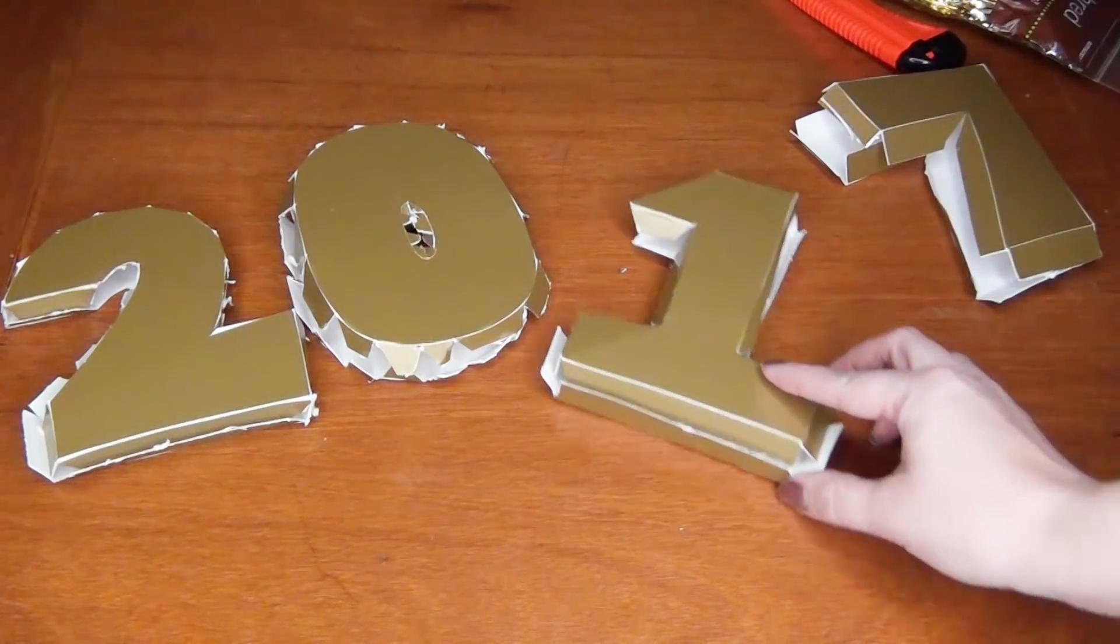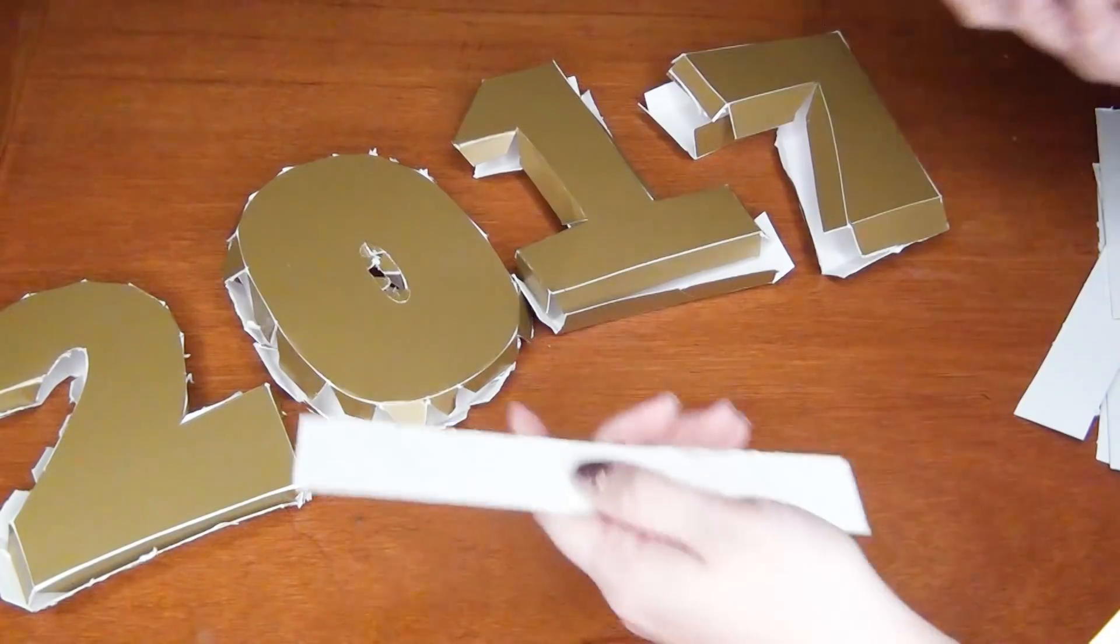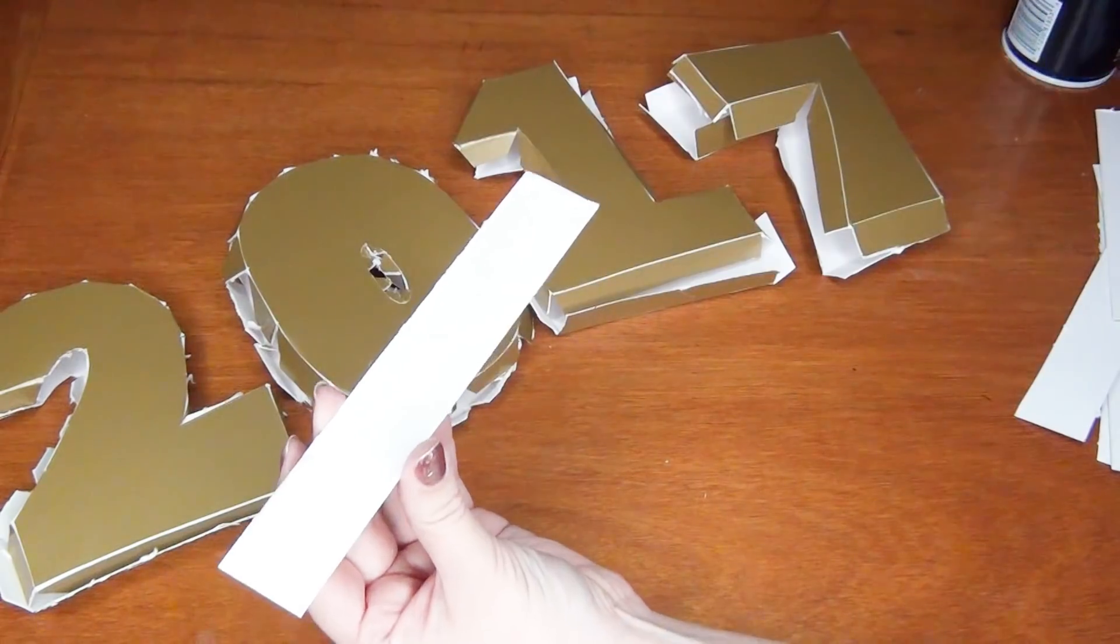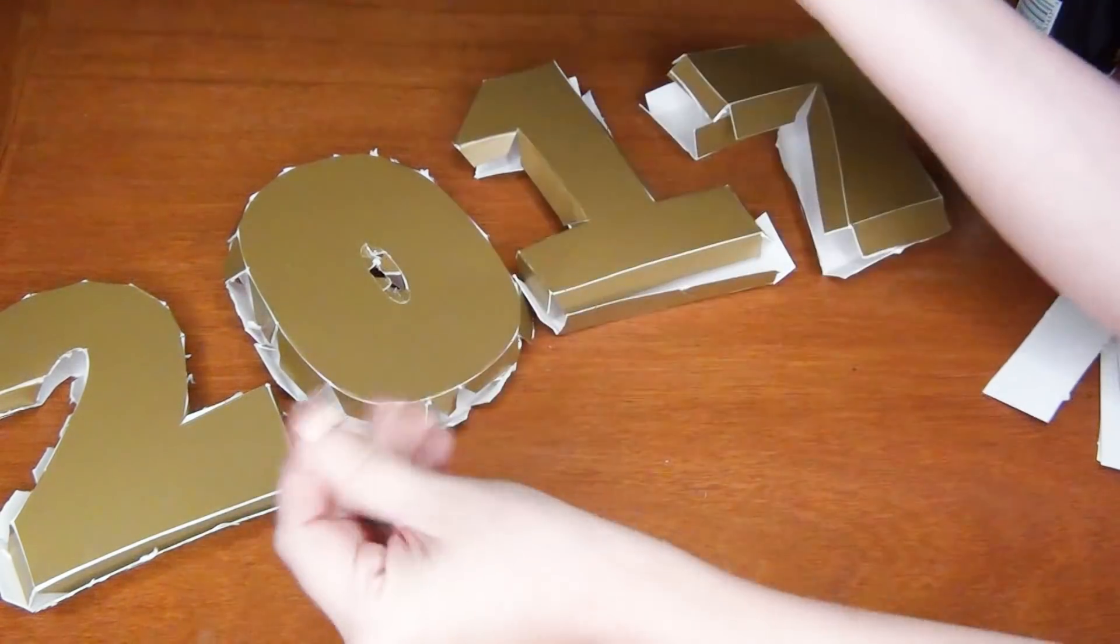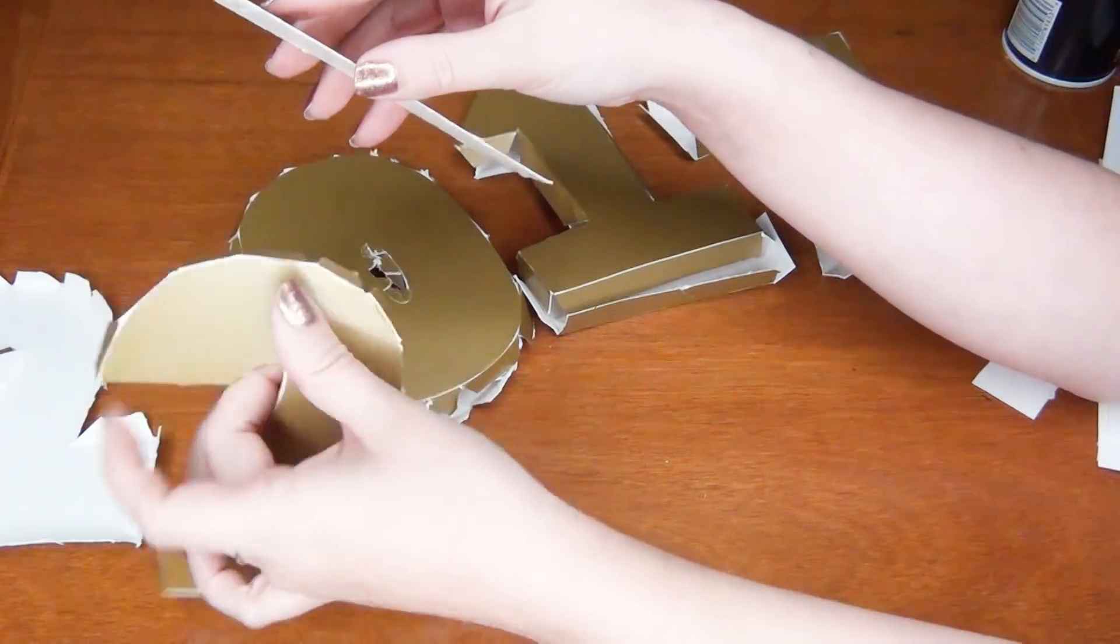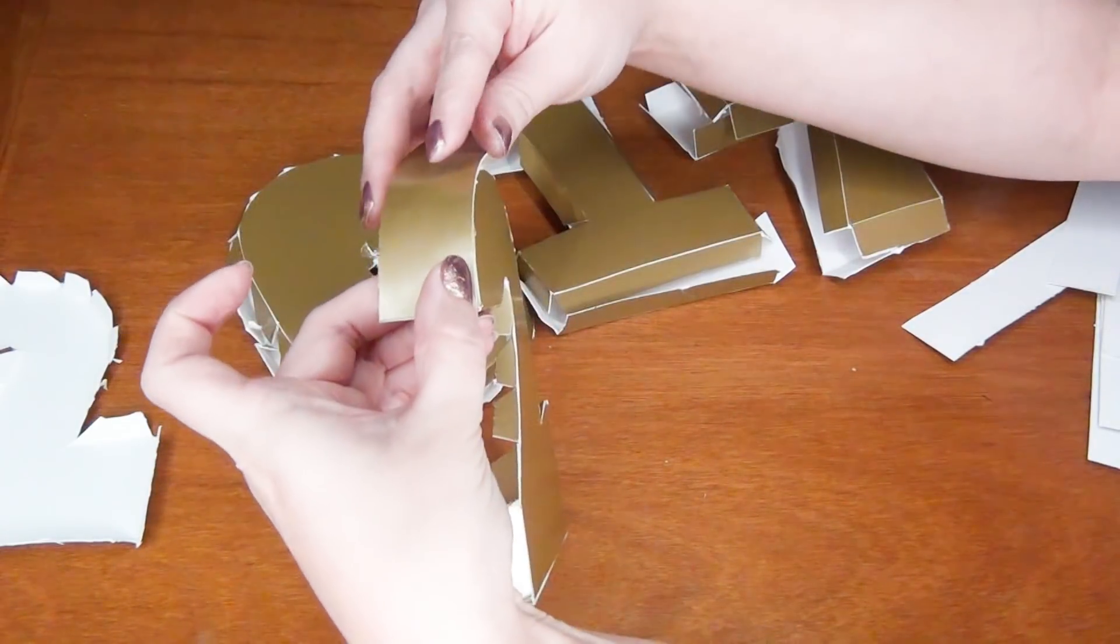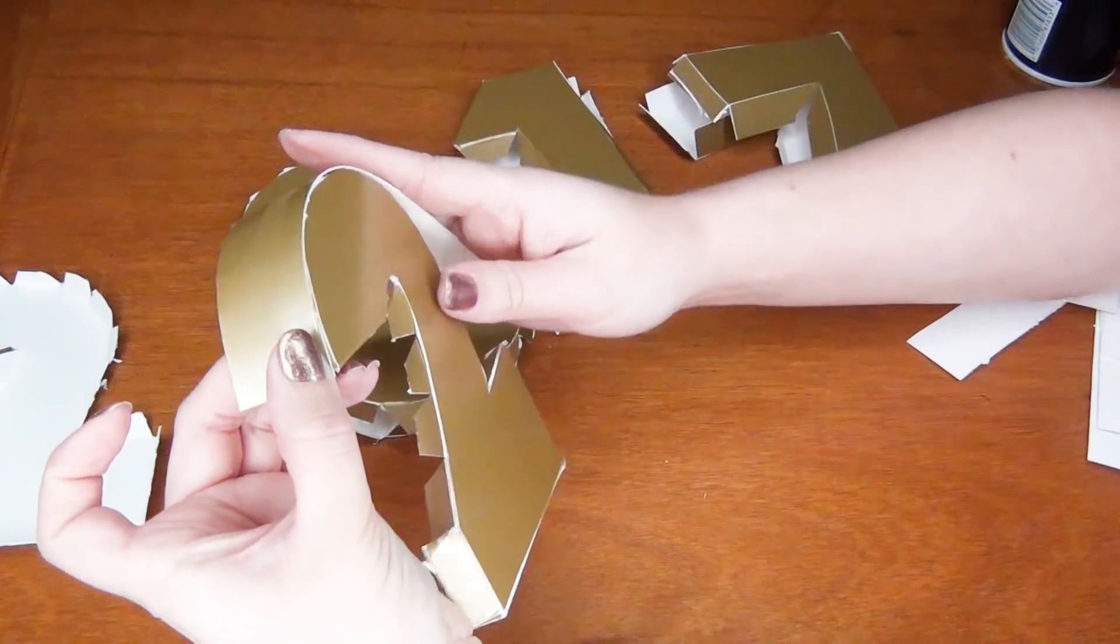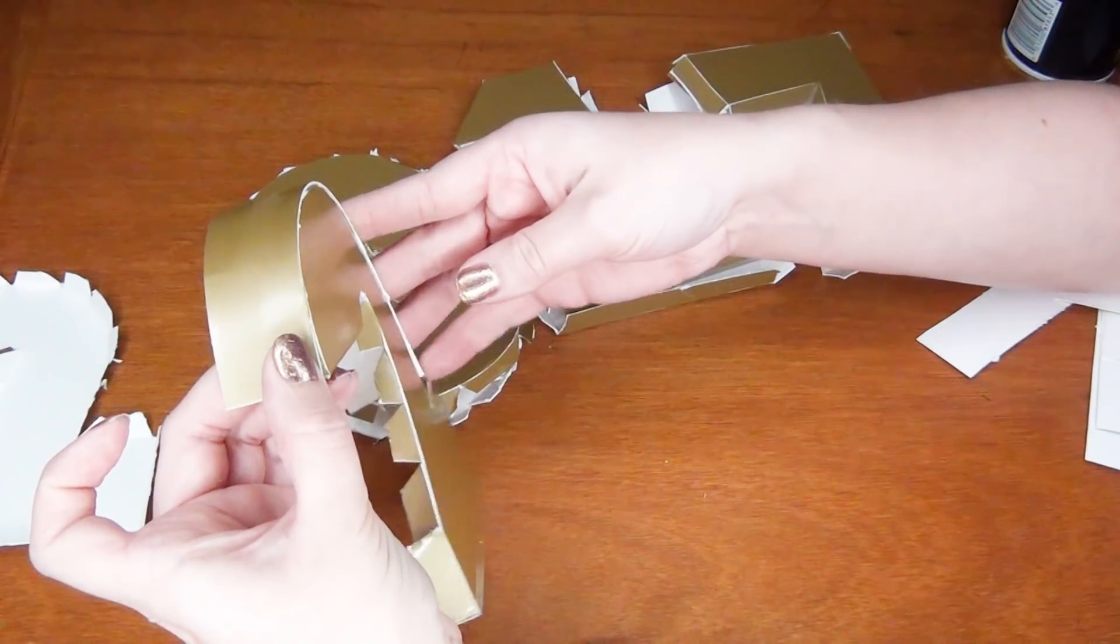Once you have the fronts and backs of each of your numbers cut out, cut out several strips of paper plate as well. Then put a generous amount of spray adhesive on the blank side, and after that has dried a little bit and gotten tacky, press it into place around each of your numbers.